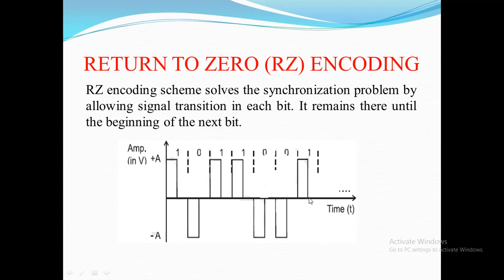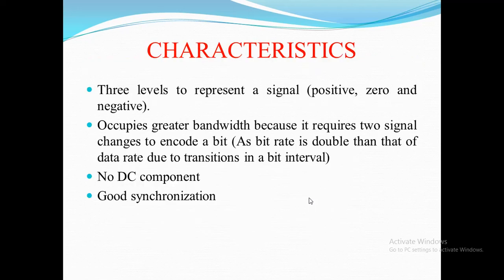In RZ encoding, the signal returns to zero level after each bit. The characteristics of RZ encoding are: it has 3 levels (positive, negative, and zero). It occupies greater bandwidth because it requires two signal changes to encode one bit. There is no DC component, and synchronization is good because the receiver can always identify when a new bit is starting and when it is ending.